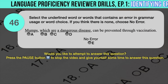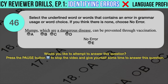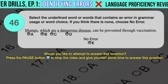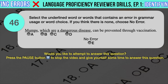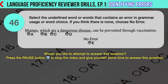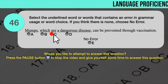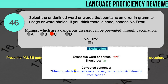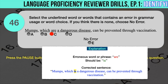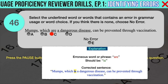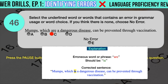Drill question number 46. 'Mumps, which are a dangerous disease, can be prevented through vaccination.' The underlined words are: A. Mumps, B. Which, C. Are, D. A dangerous disease. The correct answer is C. 'Are' should have been 'is.' The subject 'mumps,' although always spelled with an S, is always singular in sense and requires a singular verb. Correct sentence: Mumps, which is a dangerous disease, can be prevented through vaccination.